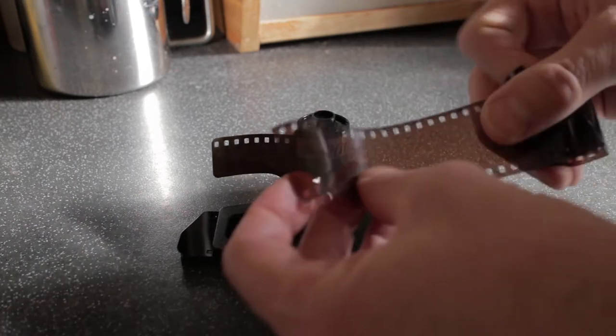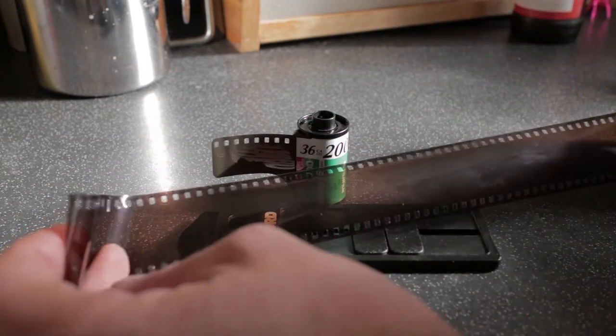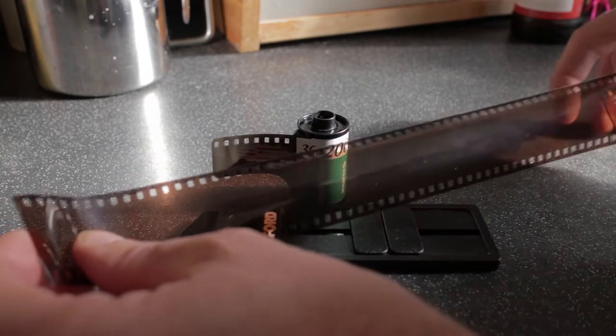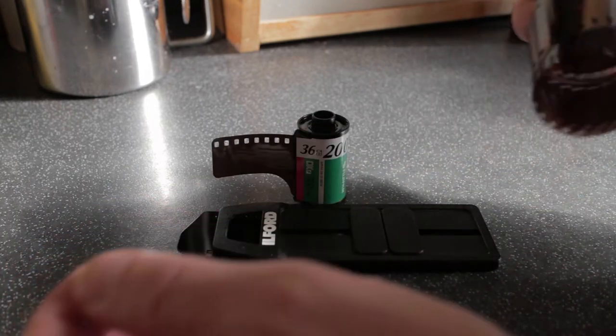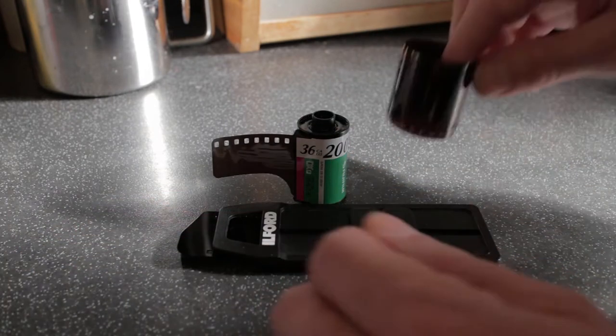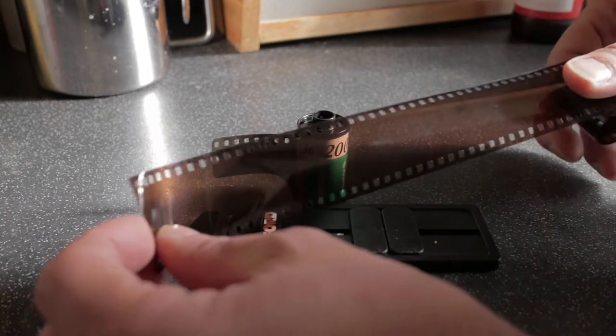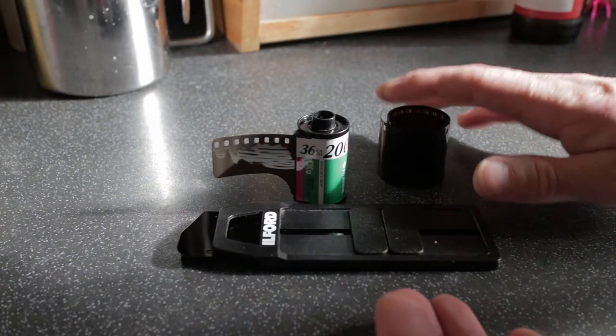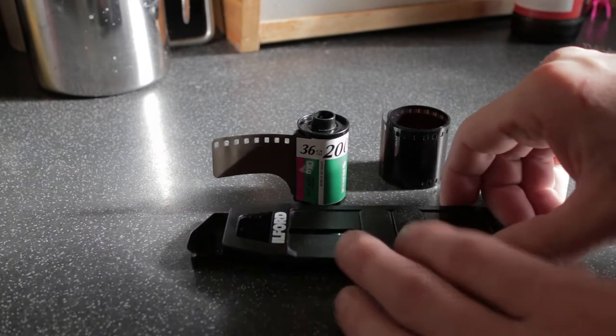Now this particular one has been developed and was an experimental one which went horribly wrong and was terribly underexposed, and there's nothing on there as you can see. So this would normally just go in the bin. However, if you've got any waste film and it doesn't have to have been developed either, it can just be a strip of film from a bulk roll or anything of that nature, you can make yourself a film leader retriever.